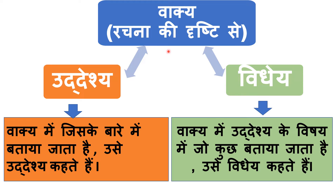Vaakya rachna ki drishti se — sentence from the angle of its composition. It consists of two main parts: uddeshya and vidhev. Vaakya mein jiske baare mein bataya jata hai, usay uddeshya kehde hai. In a sentence, the subject that is being spoken about is known as uddeshya. Whatever is being spoken about the uddeshya is known as vidhev.